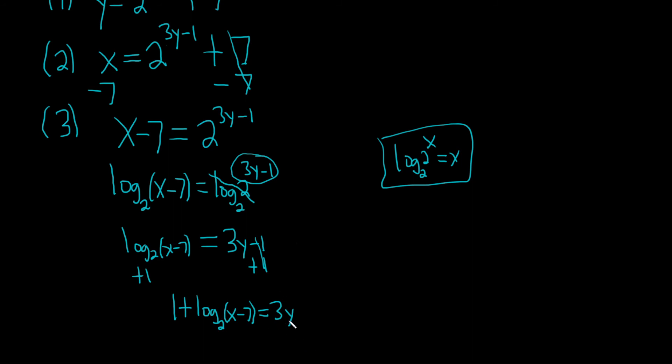To finish, we'll just divide everything by 3. Divide by 3, divide by 3. So we have y equals 1 plus the log base 2 of x minus 7, all divided by 3.